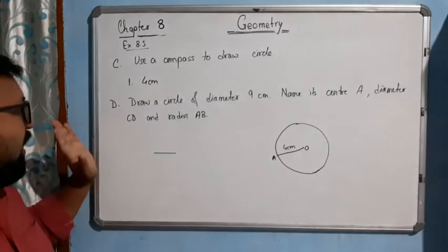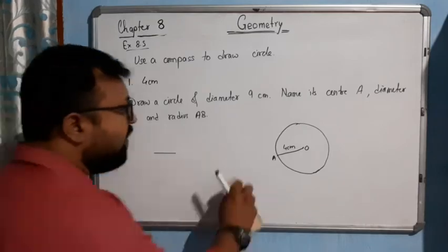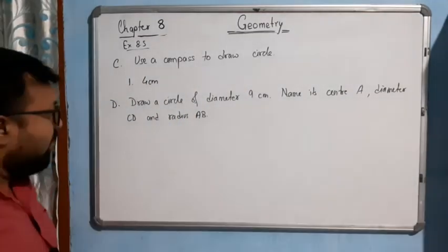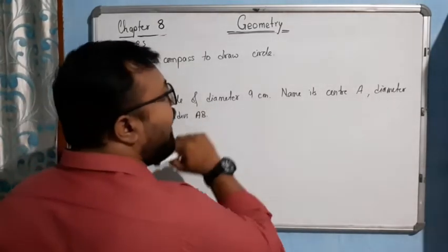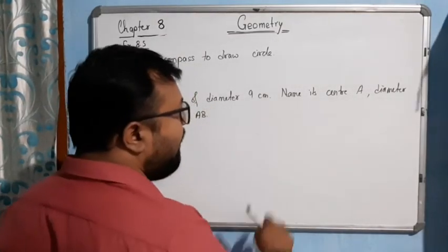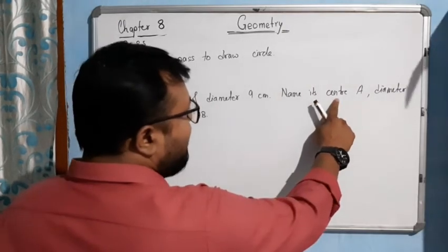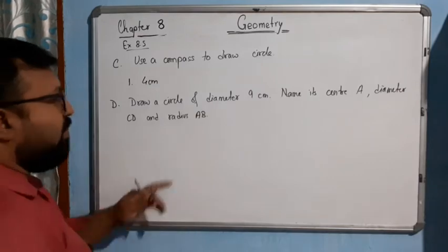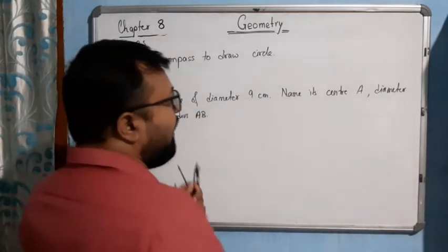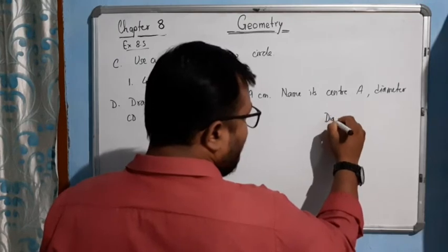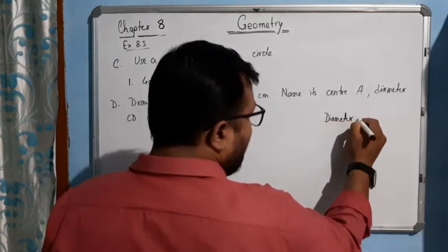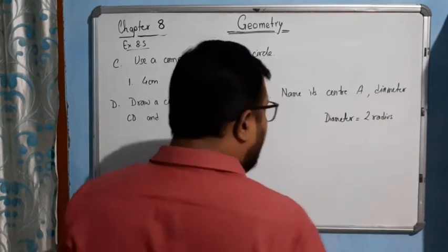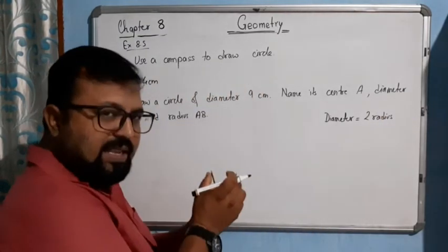Now come to question number D, the last question. Here, draw a circle of diameter 9 centimeter and name its center as A, diameter as CD and radius as AB. Now they are talking about diameter. As we know that diameter is equal to twice radius, but to draw a circle we need a radius.